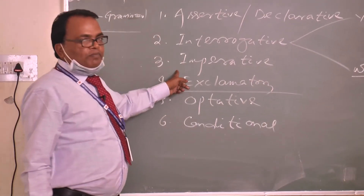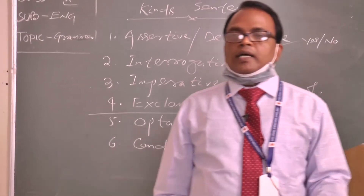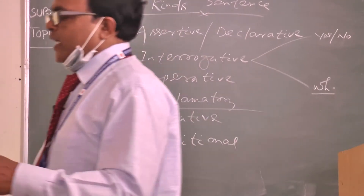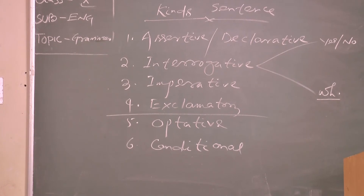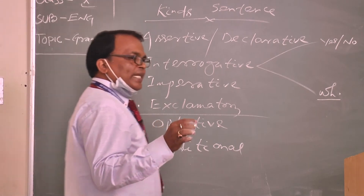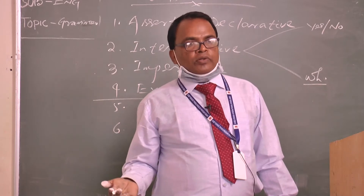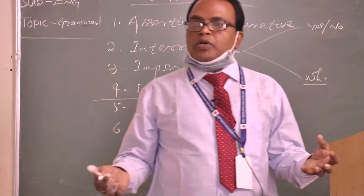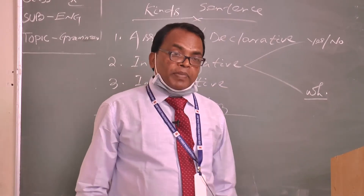What about imperative sentences? A sentence that expresses suggestions, orders, advice, requests, or commands is called imperative. Examples: 'Do it.' 'Go there.' 'Run fast.' 'Move forward.' 'Help the poor.' 'Come here.' 'Stand up.' 'Sit down.' 'Do your work correctly.' 'Don't waste time.' That is called an imperative sentence.